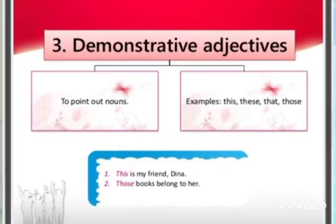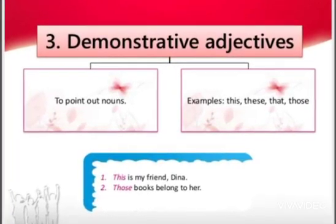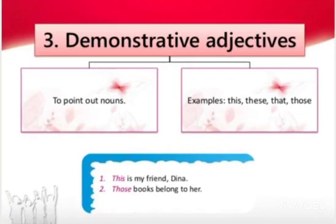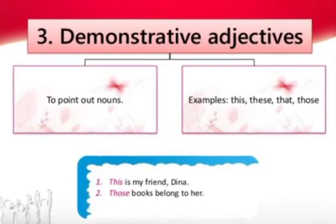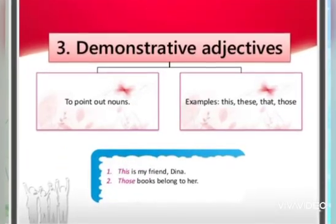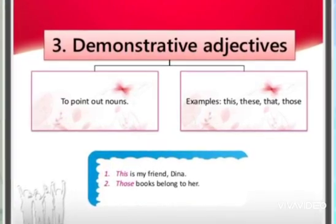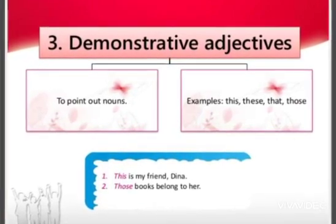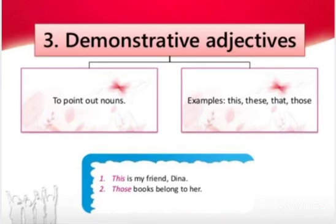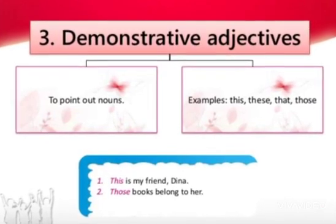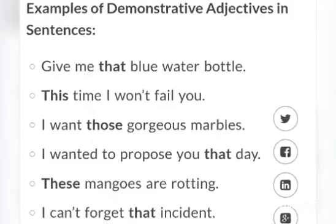Demonstrative adjectives are the adjectives used to point out a noun. The words like this, these, that, and those are used as demonstrative adjectives. This and that are used with a singular noun, whereas these and those are used with a plural noun.